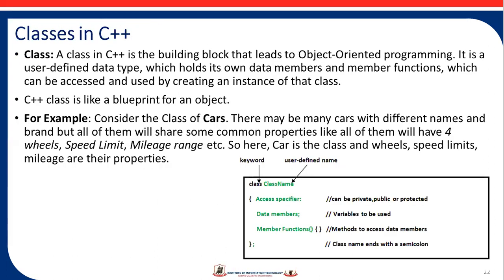Next are classes in C++. A class in C++ is the building block that leads to object-oriented programming. It is a user-defined data type which holds its own data members and member functions, which can be accessed by creating instances of that class. A C++ class is like a blueprint for an object.